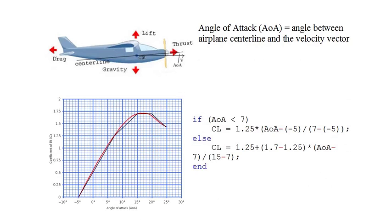The red graph shows the dependence of the lift coefficient on angle of attack for a typical real airplane. At minus five degrees the lift coefficient is zero; it increases linearly to 1.5 at 10 degrees, levels off at 15 degrees, and begins falling at 20 degrees. For our airplane, the lift coefficient is 1 at 5 degrees. The black line shows a piecewise linear approximation used in the simulation, calculated in the MATLAB code, using two linear components with a breakpoint at seven degrees.